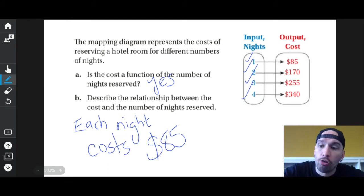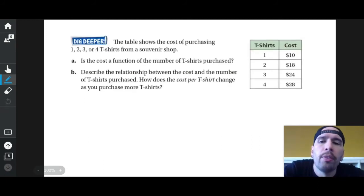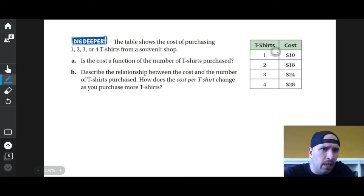The table shows the cost of purchasing one, two, three, or four t-shirts from a souvenir shop. Is the cost a function of the t-shirts purchased? Well, if I buy one shirt I pay $10, if I buy two I pay $18, they're giving me a bargain. If I buy three, $24. If I buy four, $28. Look at that bargain! Why would I go there and only buy three shirts? It's wacky. Describe the relationship between the cost and the number of t-shirts purchased.